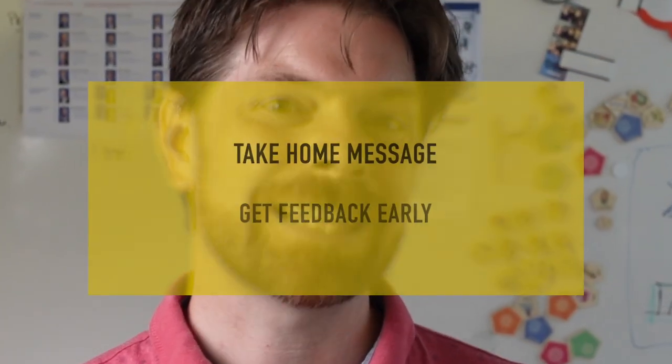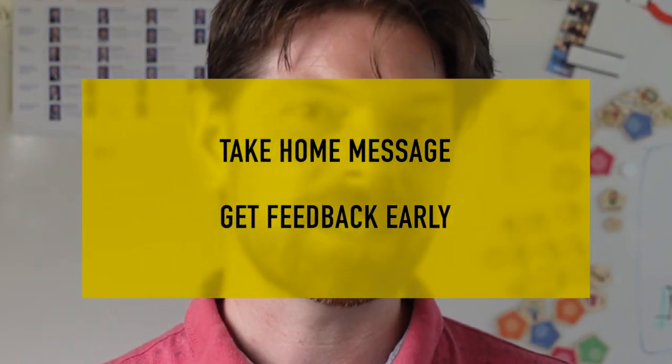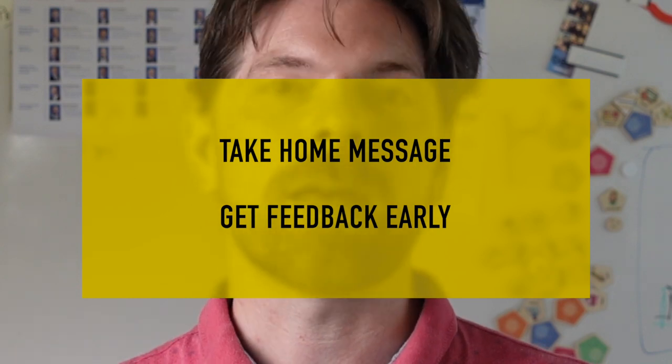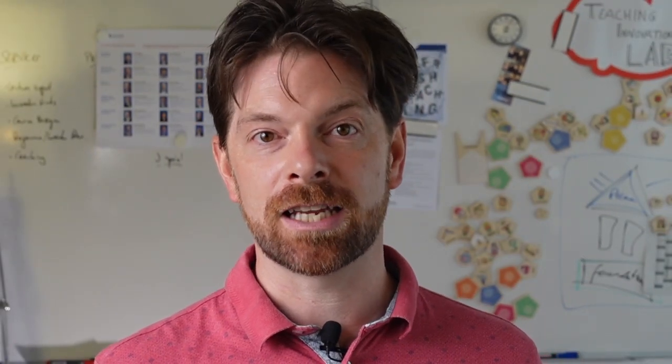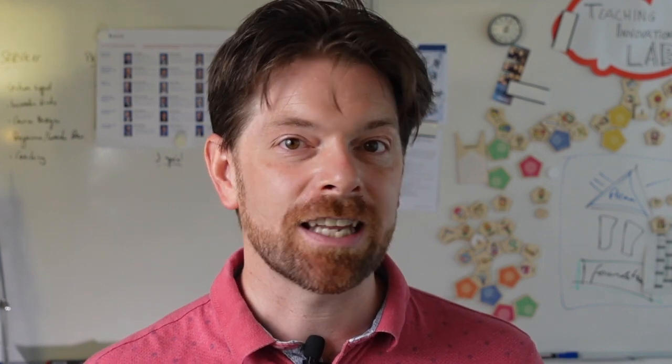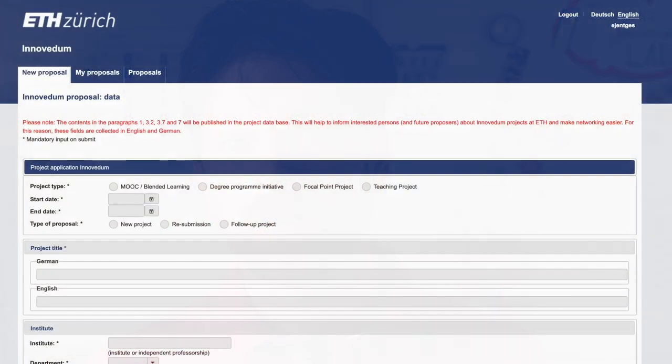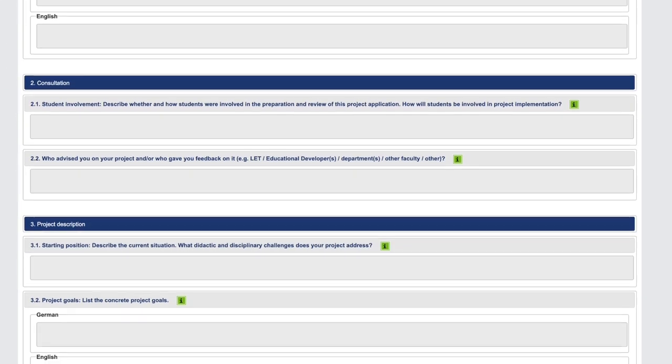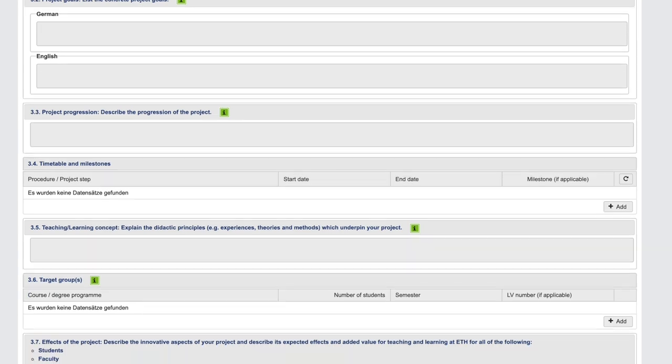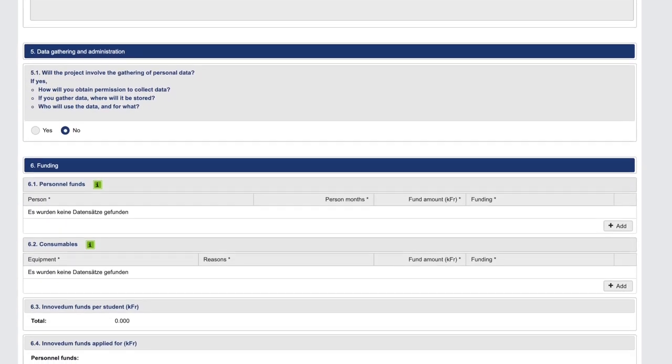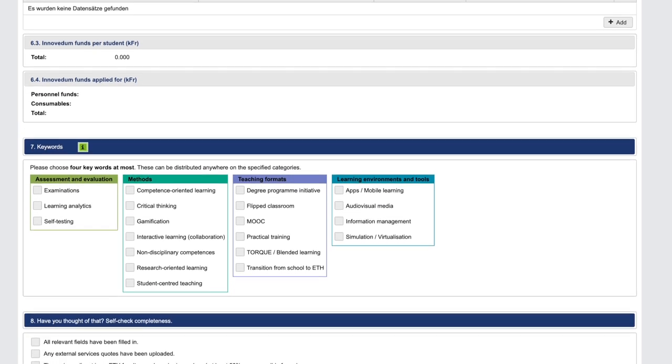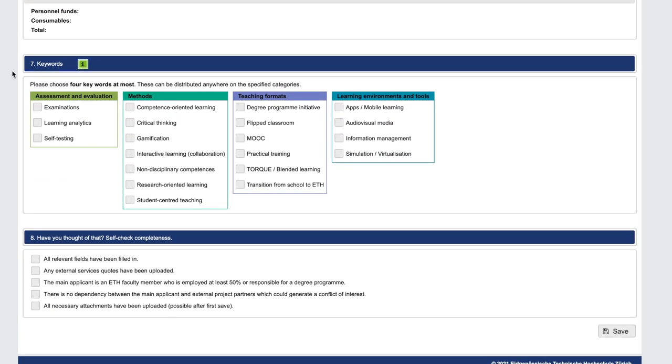All these tips can be summed up in one take-home message: get feedback early. Start writing three months before the submission deadline, and you don't need to write every day, but make a first draft closely following the Innovidum submission template and talk with someone about it to gain more clarity about your core idea. Develop a second draft, send this one out to get feedback from a few learners, other teachers, and didactic experts to incorporate their ideas.